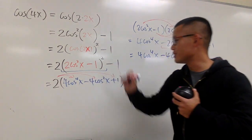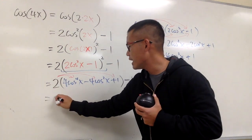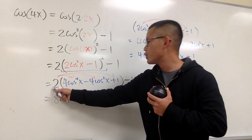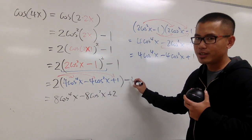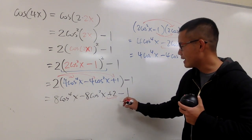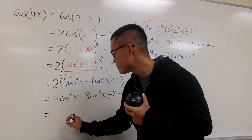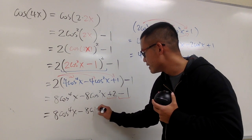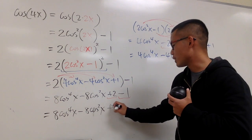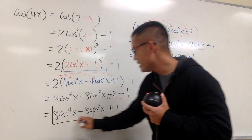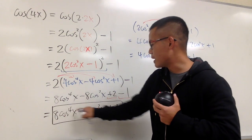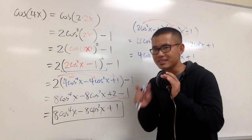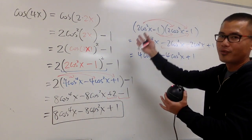Distribute: 2 times 4 is 8, so we have 8 cosine to the fourth power x. Then 2 times negative 4 is negative 8 cosine squared x. Then 2 times 1 is plus 2. Don't forget to bring down the minus 1. Combining the plus 2 and the minus 1 gives plus 1. So the final answer is 8 cosine to the fourth power x, minus 8 cosine squared x, plus 1. This is it — everything is in terms of cosine x. This is cosine of 4x.